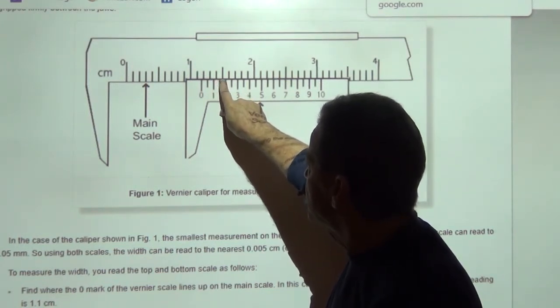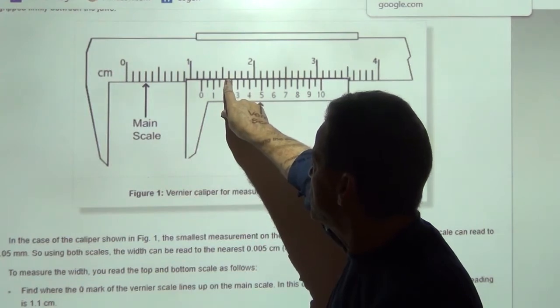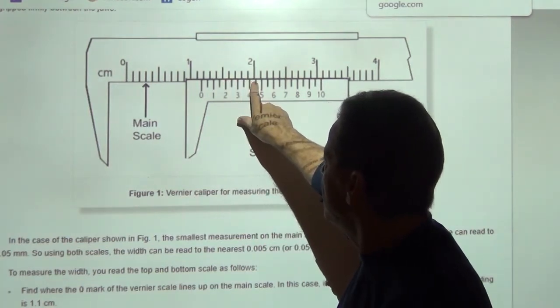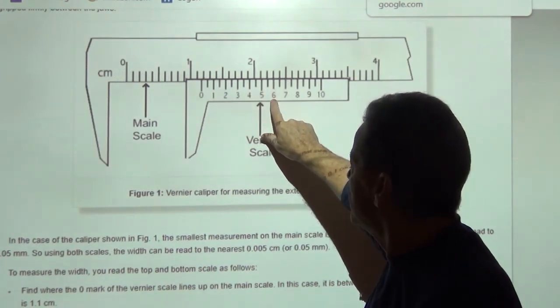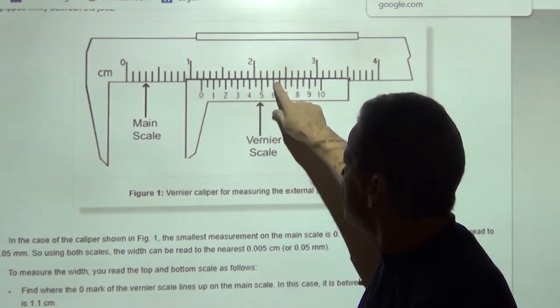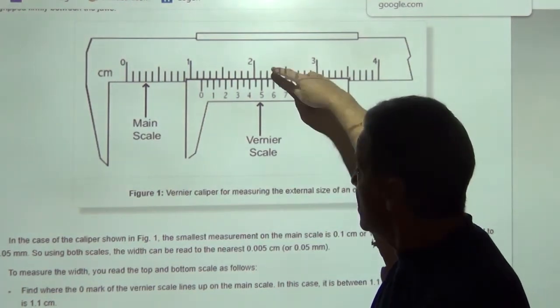We get closer there, there, there. And you can see right about the number six right here, this line finally lines up with one of these lines up here. Now, which one of these up on top doesn't really matter.